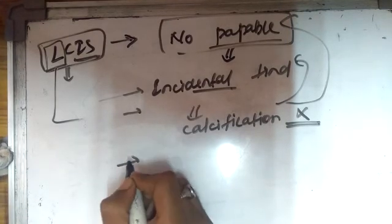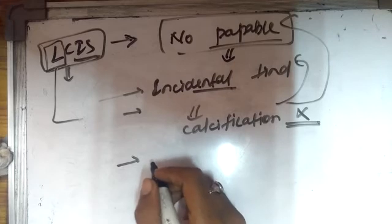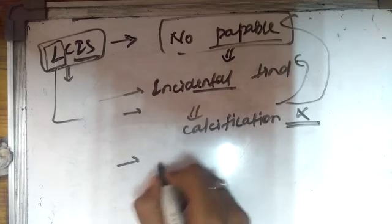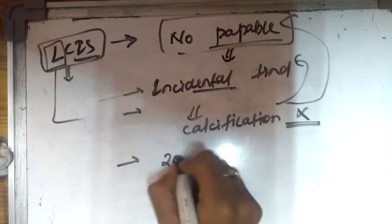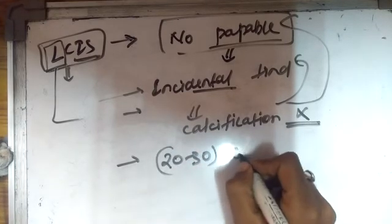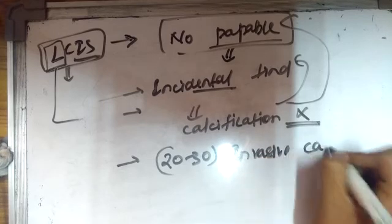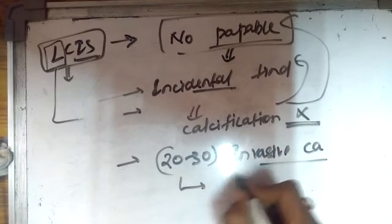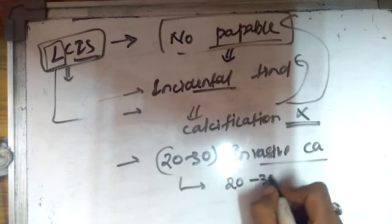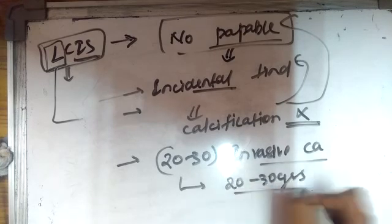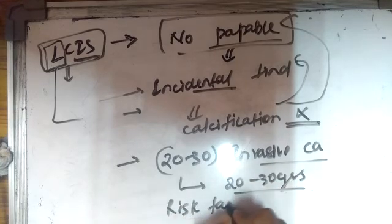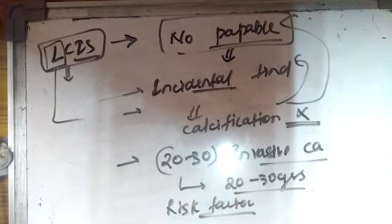It cannot be detected in mammography also. There are 20 to 30 percent chances of invasive carcinoma within a span of 20 to 30 years. So it is a risk factor for invasive carcinoma. Another characteristic feature is that unlike DCIS there are equal chances of invasive carcinoma in both breasts.